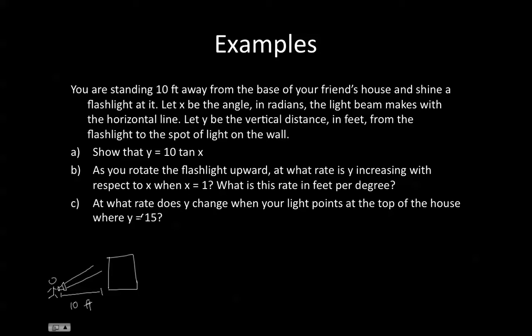Let X be the angle in radians the light beam makes with the horizontal line. So over here we have X, and let Y be the vertical distance in feet from the flashlight to the spot of light on the wall. Let's say your flashlight's hitting it around here. This height here is equal to Y.